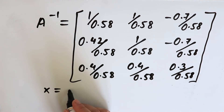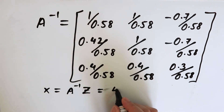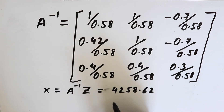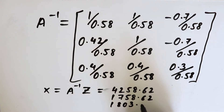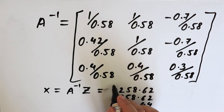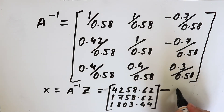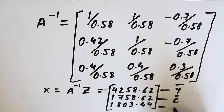X equals A inverse multiplied by the constant vector. We get the values 4258.62, 1758.62, and 1803.44. The first value gives the equilibrium income, the second value gives the equilibrium consumption, and the third value gives the equilibrium tax.